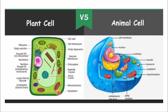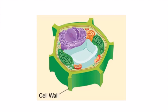We will now take one organelle at a time and study each in detail. Let us look at the first cell organelle — the cell wall. Cell wall is present in plant cell only. It is elastic and it is a strong coat; it helps like a coat around the cell.